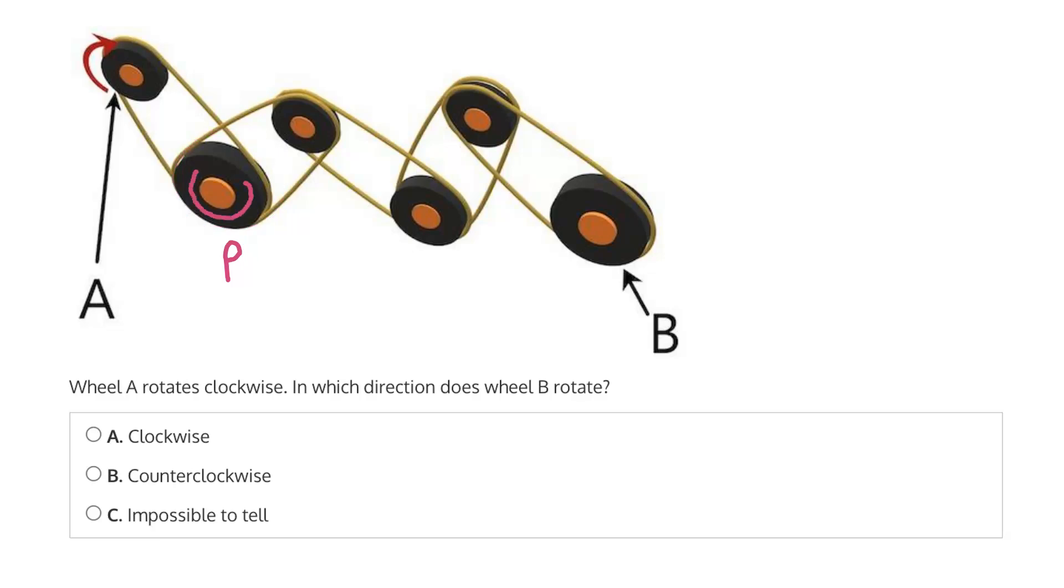So if A is rotating clockwise, then P will also be rotating clockwise. And this is what we're going to see cascading through the whole system.